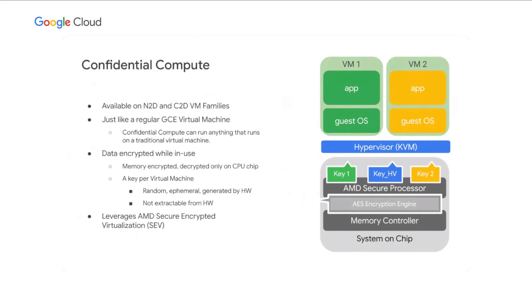Confidential Compute is another great recent improvement. It's essentially identical to a regular VM — customers can run any workload they usually run, and by clicking a single checkbox, they transform their VMs into Confidential VMs where all memory pages are encrypted. The data is encrypted in memory and decrypted only when fetched to the CPU chip. Keys are generated in hardware on the CPU, are ephemeral, and cannot be extracted by anyone — including Google. Each VM has its memory encrypted by a unique per-VM key, allowing customers to protect their data end-to-end: in transit, at rest, and in use.